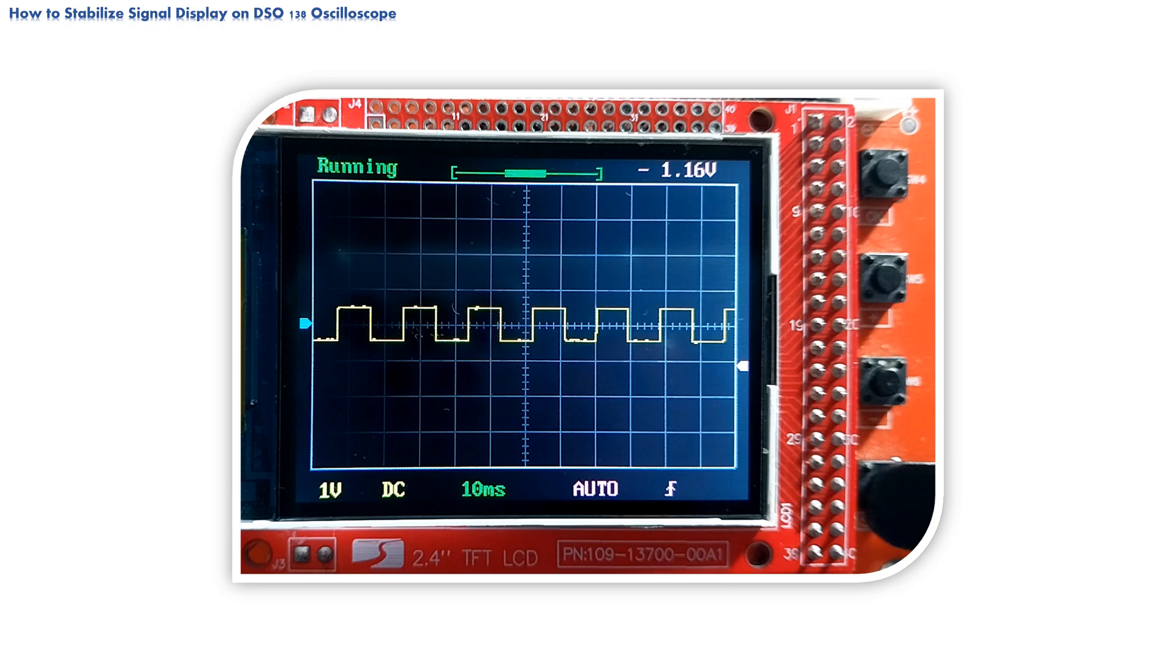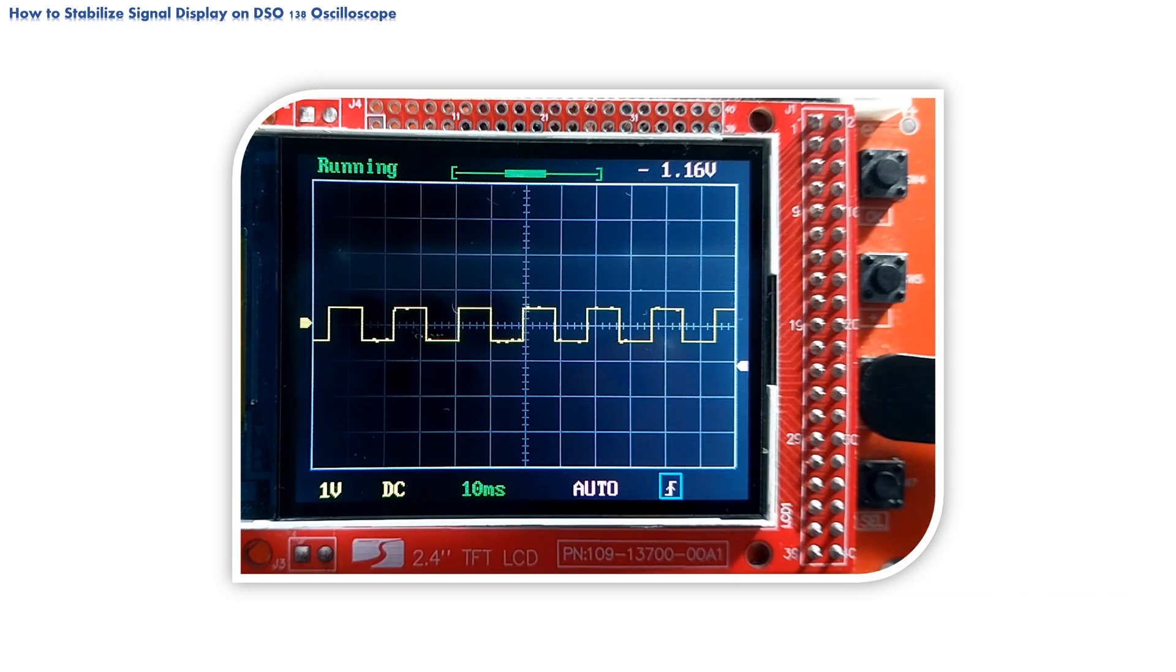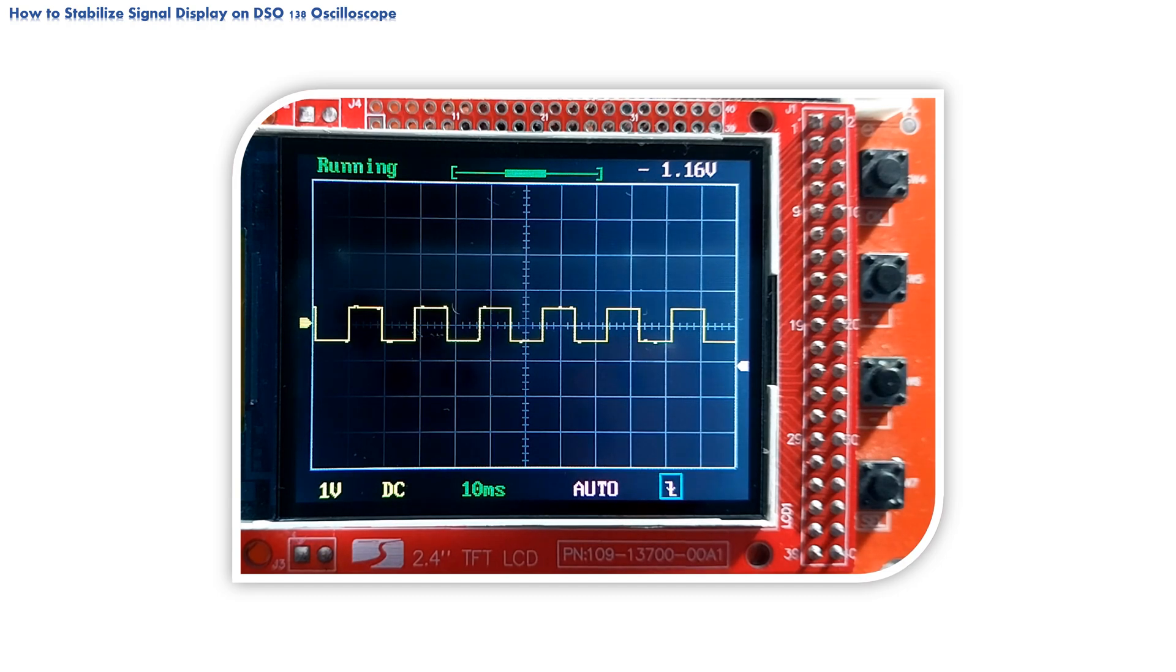The second option is descending-trigged icon. Analog to previous, it sets oscilloscope in mode of work where change from higher to lower voltage in signal initiates trigger event.